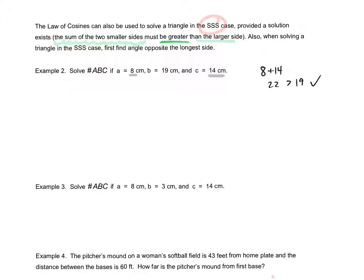So we'll have to solve example 2. For example 3, the two shortest sides are 8 and 3. 8 plus 3 is 11, which is less than 14, the third side. There is no triangle, so there's no need to solve it, but we do need to indicate that there is no solution.